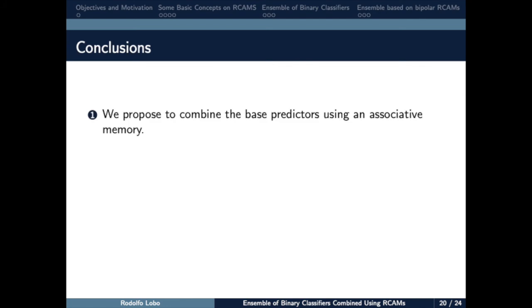Now the conclusions. This paper provides a bridge between ensemble methods and associative memories. We propose to combine the base predictor using an associative memory model. An associative memory should be able to retrieve a stored item from a corrupted or partial version of it.